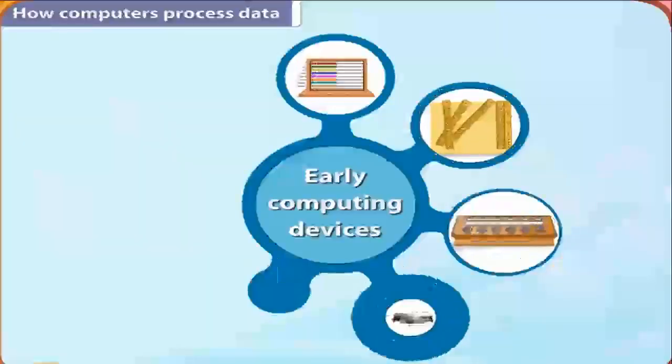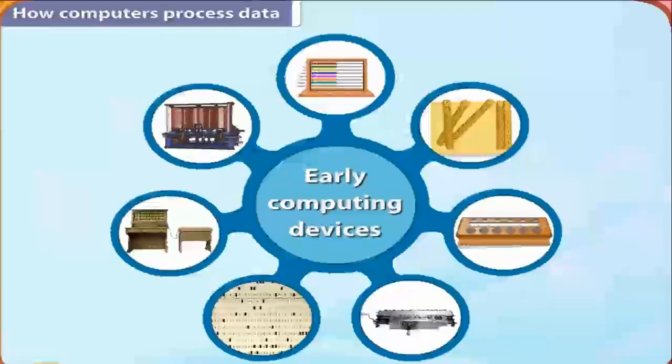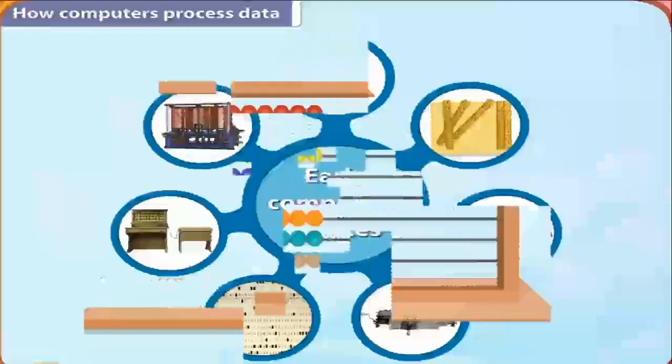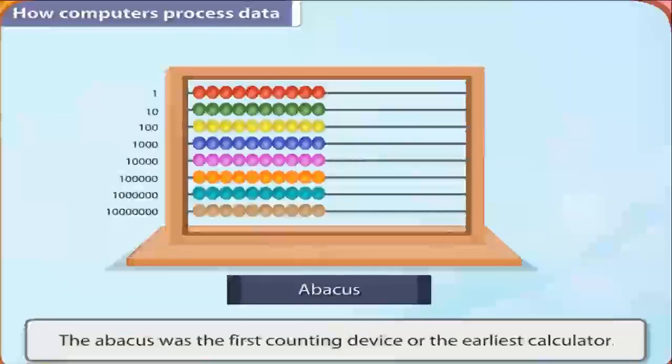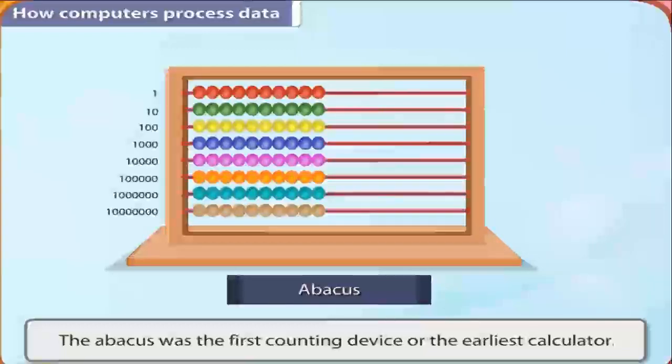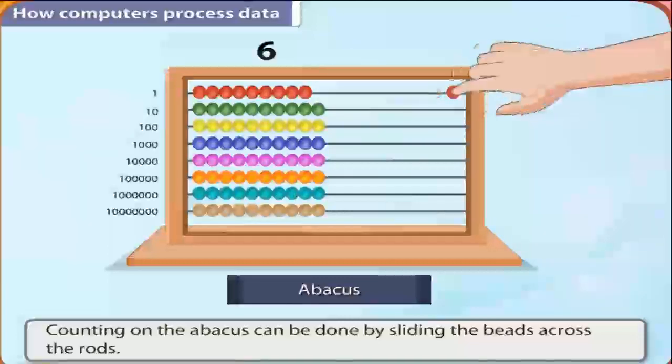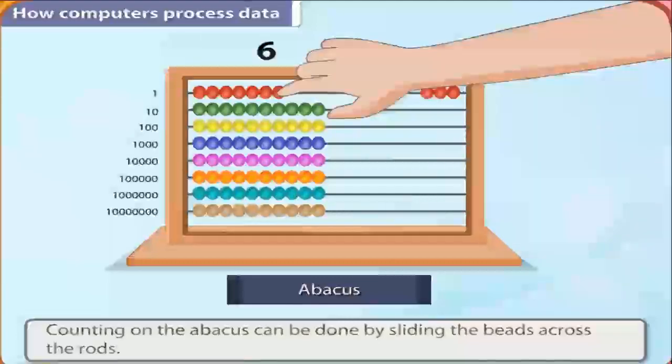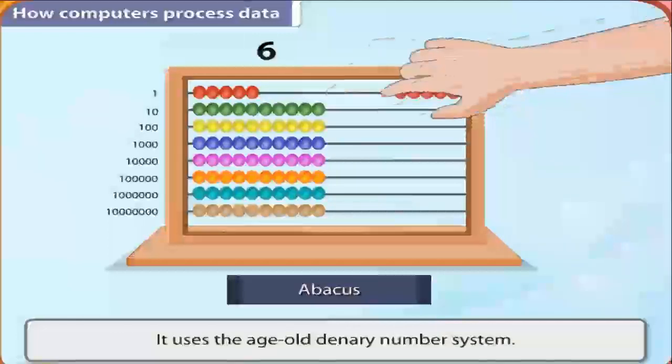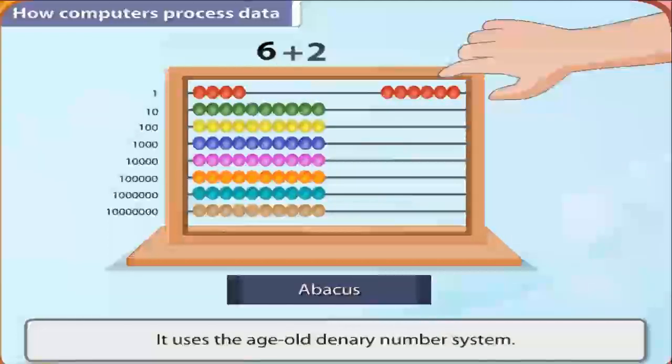Around 3000 years ago, people used the abacus to calculate complex sums. The abacus was the first counting device or the earliest calculator. It was used to add and subtract numbers. It consists of a wooden frame with rods, each having beads. Counting on the abacus is done by sliding the beads across the rods. It uses the age-old denary number system.